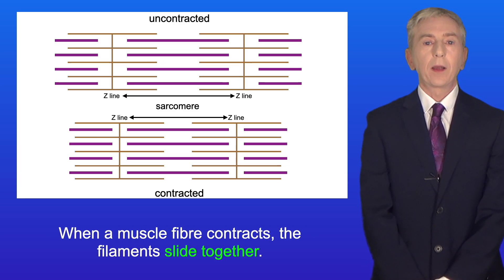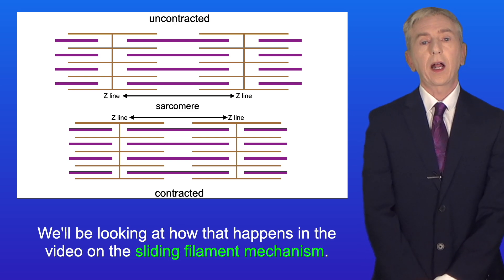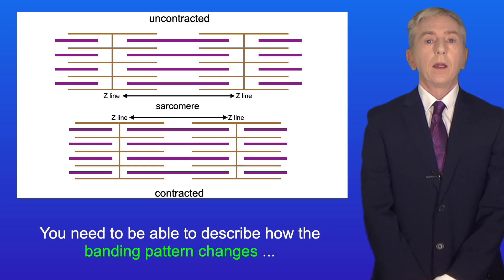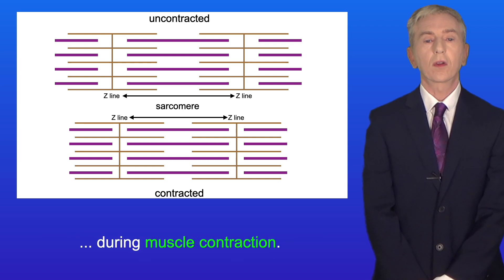Now when a muscle fiber contracts the filaments slide together and we'll be looking at how that happens in the video on the sliding filament mechanism. Now you need to be able to describe how the banding pattern changes during muscle contraction.